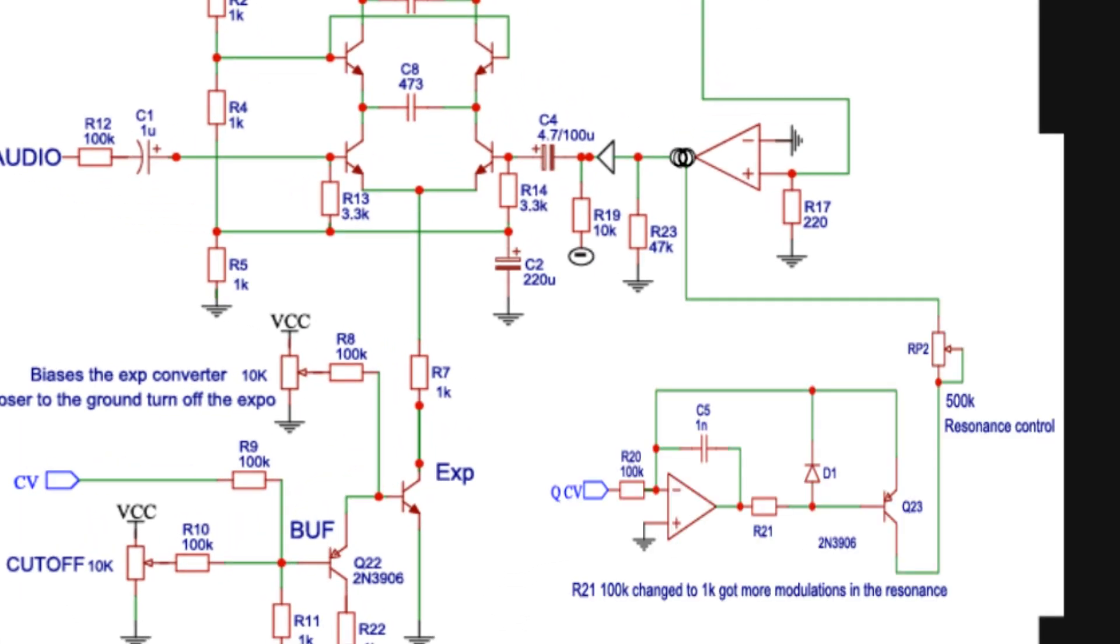So that is why I added this part of the circuit, which converts an external control voltage into a control current, which then controls the gain of the feedback going into the filter. And there we have it: voltage-controlled resonance.